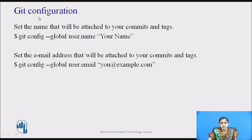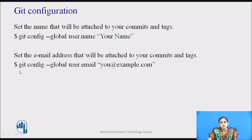You need to configure your username and email ID. To set the name that will be attached to your commits and tags, use the command: git config --global user.name and specify the username. To set the email address attached to your commits and tags, use: git config --global user.email and specify your email ID.